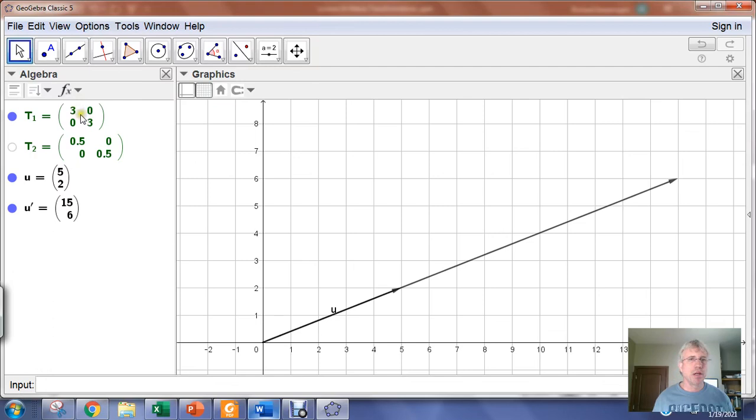So here I have a matrix T sub 1 that dilates things to three times larger, dilates vectors. Here I have a matrix T sub 2 that makes vectors half as long as they were before. So we could actually compose these.